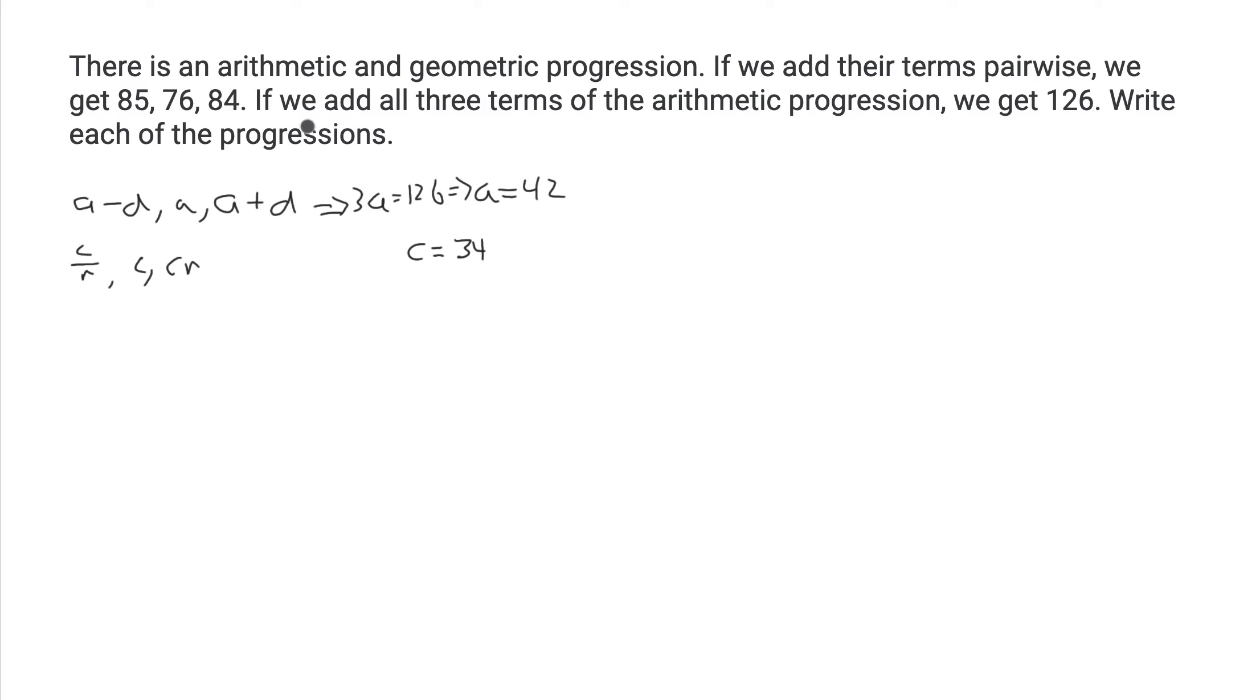Now let's check our last two results, which are from adding the first pair of terms and the third pair of terms, which tells us that a minus d plus c over r equals 85, and a plus d plus cr equals 84.